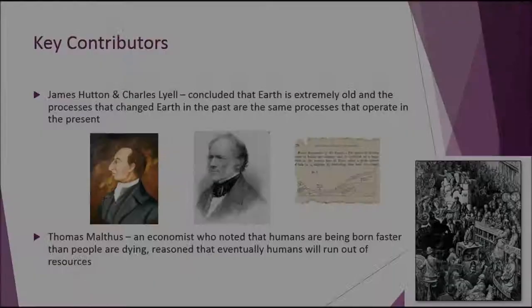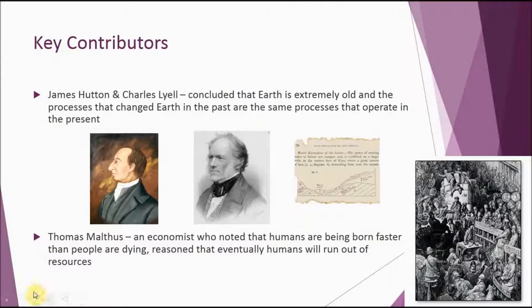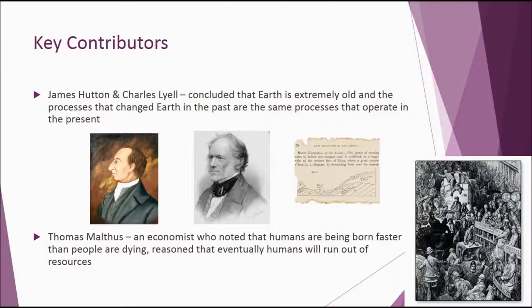Another individual who helped influence Darwin is Thomas Malthus. He was an economist, and just through his observations of nature and other animal populations, he always noticed that there are always more individuals in a population than can survive. Growing up in the 1800s, he recognized that the human population was growing at a very quick rate — more humans were being born than dying. He reasoned that the laws of nature are no different for animals than for us humans. So he said that eventually, if we continue on this path, humans will run out of resources, and that got Charles Darwin thinking: if animals are running out of resources, they might be competing with one another, and if they compete, some might be just a little better at it than others.